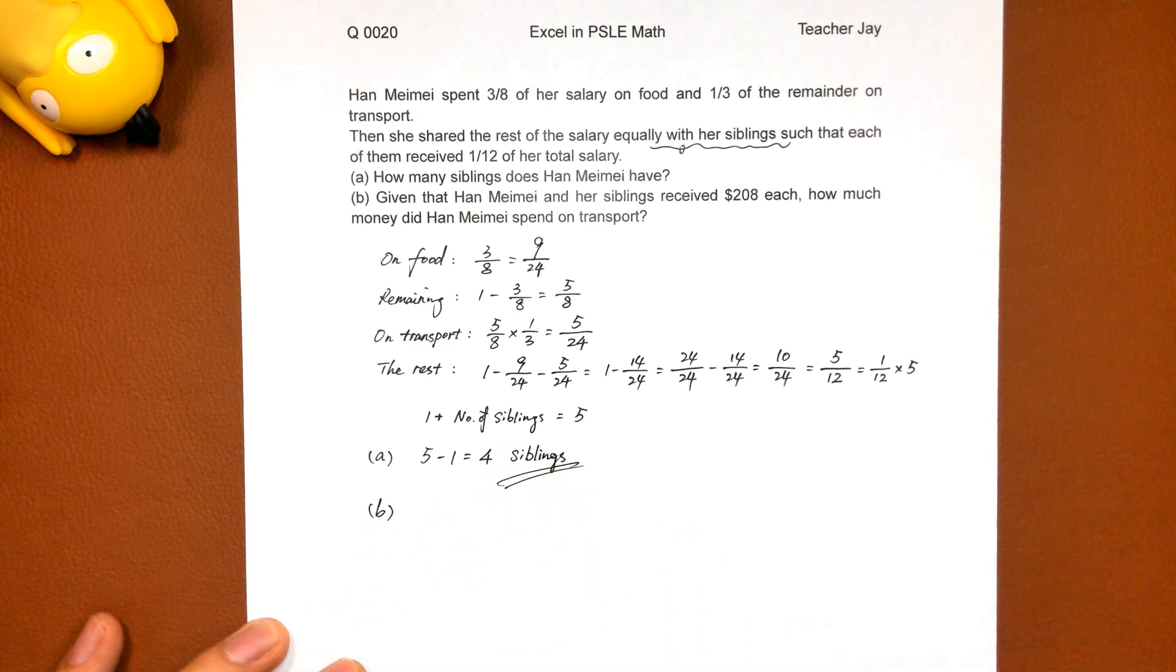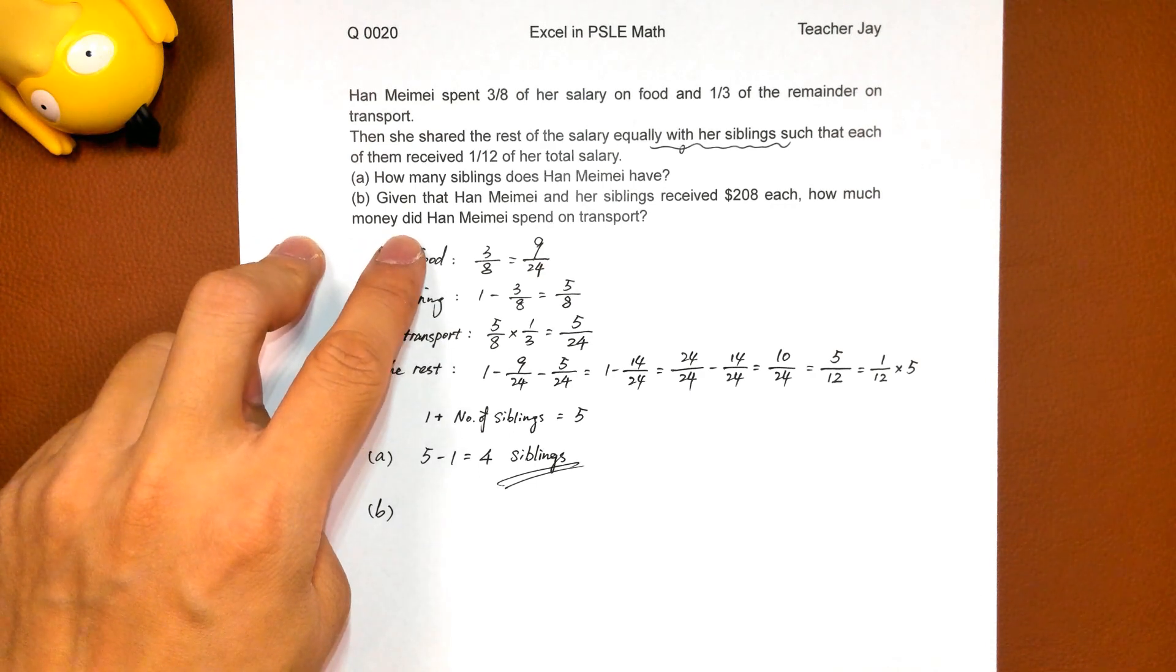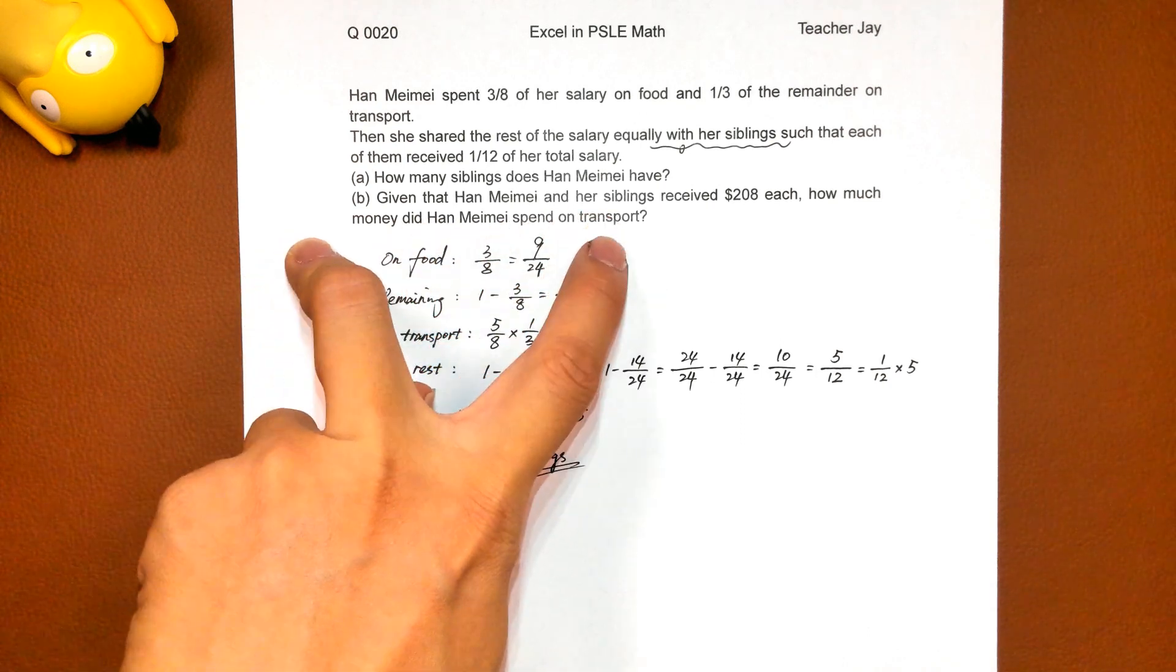Part B. Given that Han Mei and her siblings received two hundred and eight dollars each, how much money did Han Mei spend on transport?